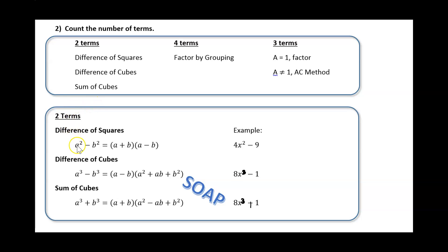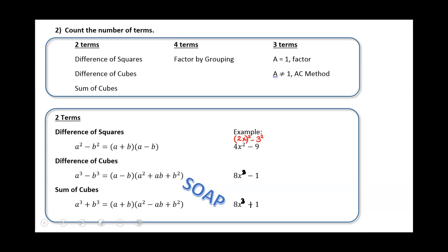For a difference of squares, it's a squared minus b squared, so two perfect squares being subtracted, and that factors down to a plus b times a minus b. So for instance, let's say that you had 4x squared minus 9. You can see that both of those are perfect squares.